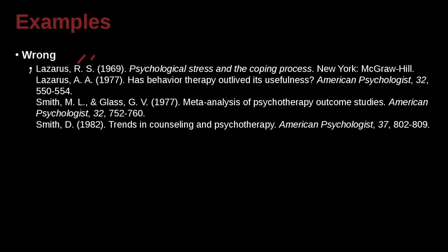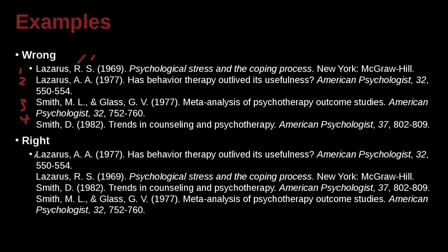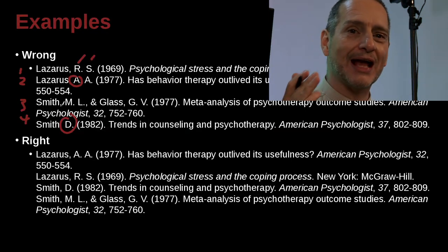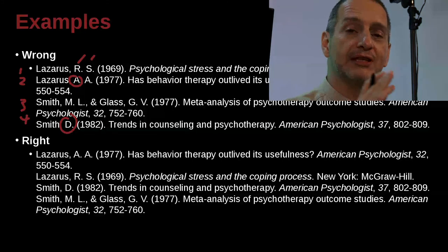Where's the problem? If you look a little bit closely, you can see there's an issue with how these are arranged. We have the first, second, third, and fourth entry, but we've got a bit of a mix-up. Lazarus A should not be second but rather should be first, and then Lazarus R, because A comes before R. Smith D should come before Smith M. So the key point is the names determine the arrangement.